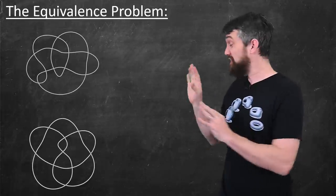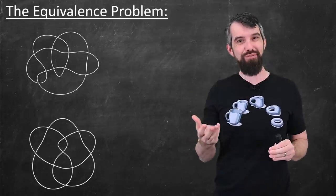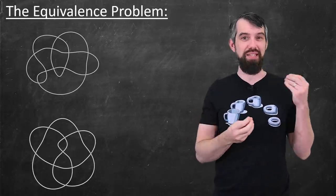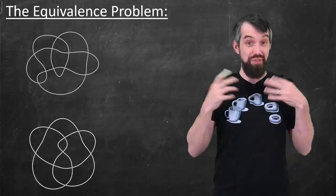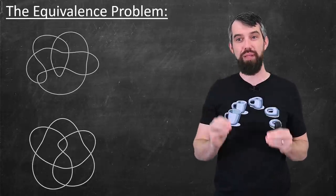And I have to indicate that in my drawing as I've done here. So then the equivalence problem is, if I start with two different knot diagrams like this, did they originate from the same knot or from a different knot?